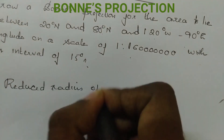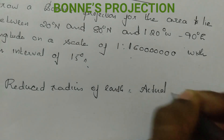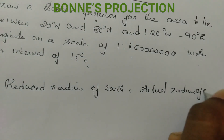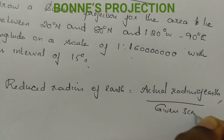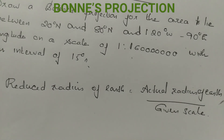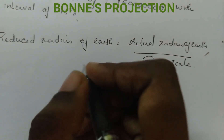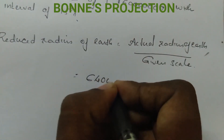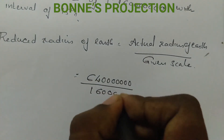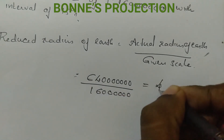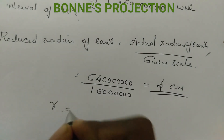Given the scale, the actual radius of the Earth: 160 will divide 640 million. That gives us 640 million divided by 160 million, which equals 4 centimeters.